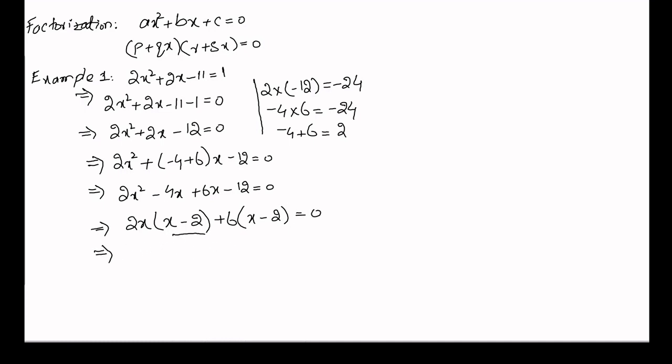Now x minus 2 is a common factor so x minus 2 will be taken as common and we have 2x plus 6 equals 0. Now using the zero product property we can write that either x minus 2 equals 0 or 2x plus 6 equals 0.